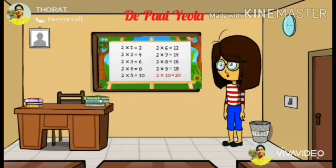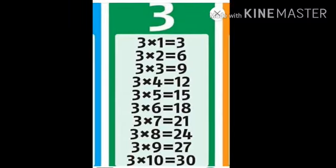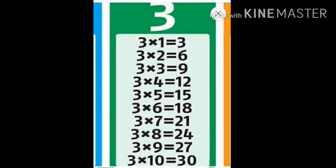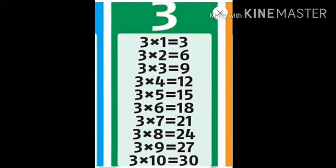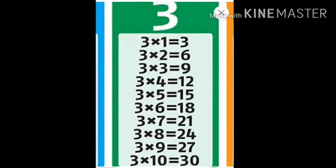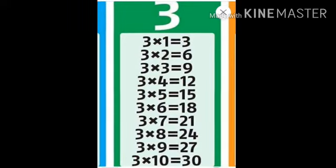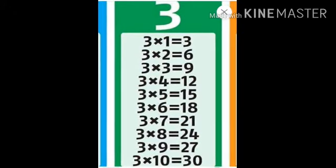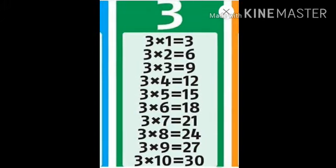All of you have to copy the table of 2 in your math notebook. Now, table of 3: 3 ones are 3, 3 twos are 6, 3 threes are 9, 3 fours are 12, 3 fives are 15, 3 sixes are 18, 3 sevens are 21, 3 eights are 24, 3 nines are 27, 3 tens are 30.